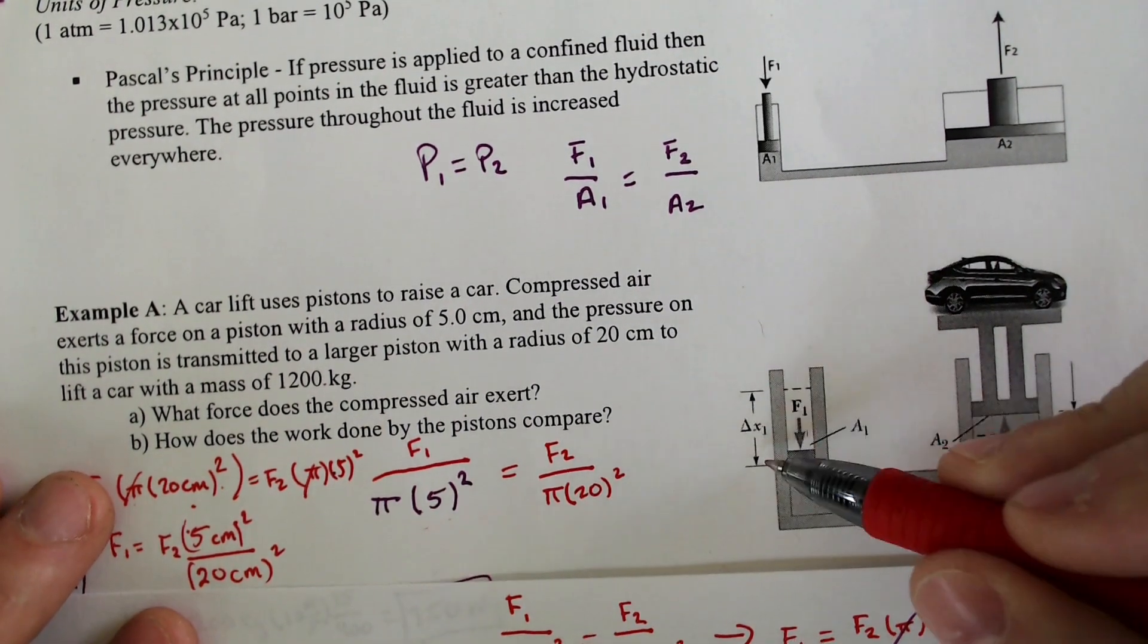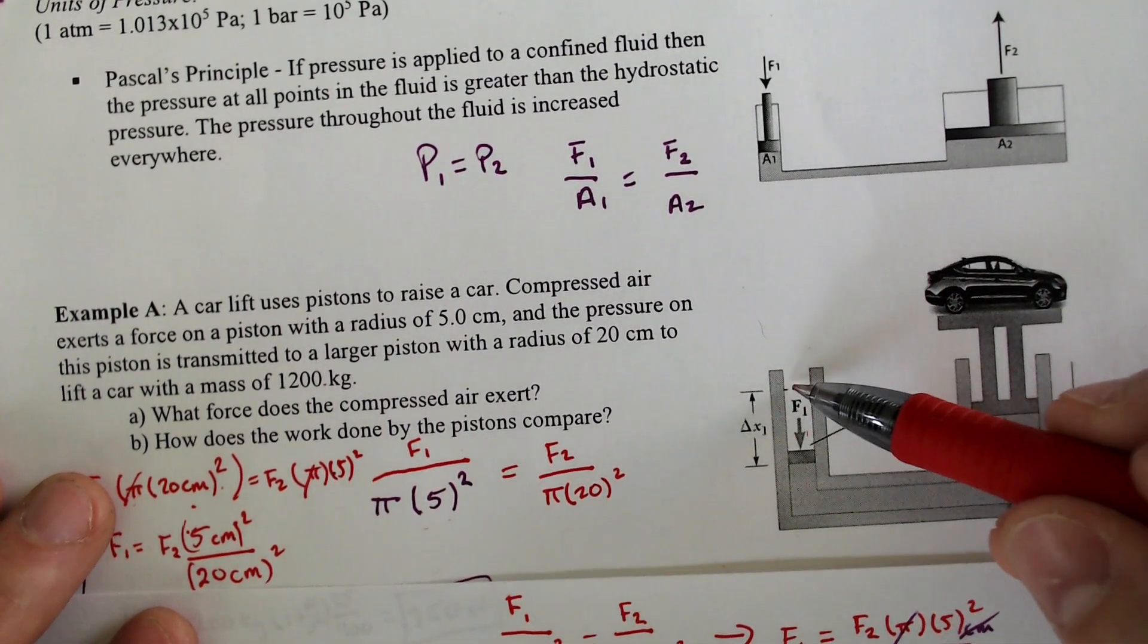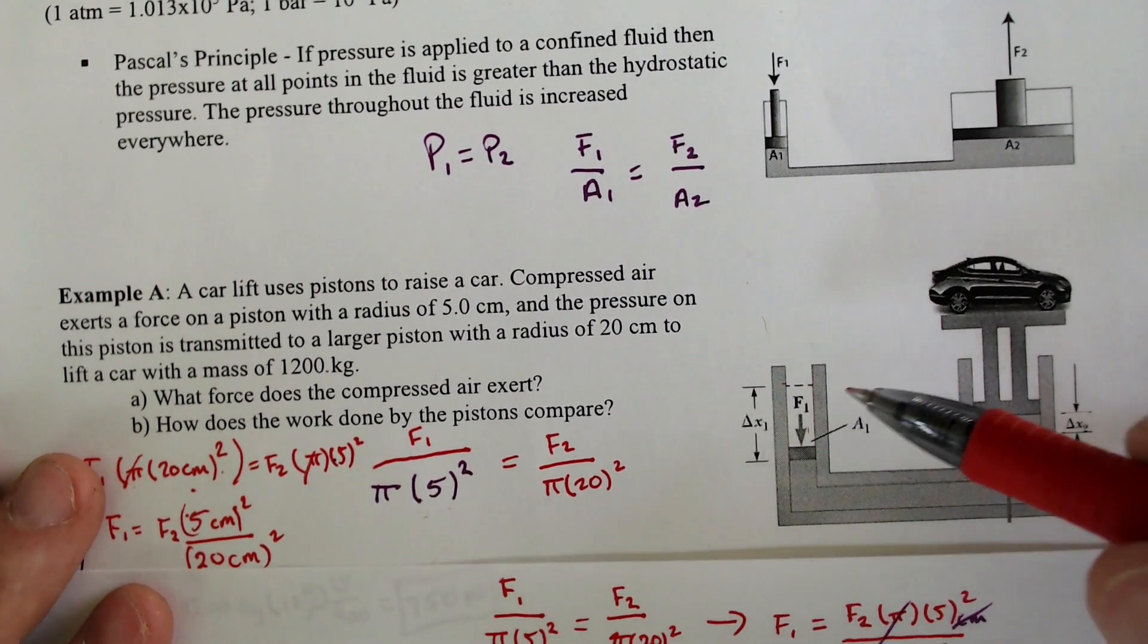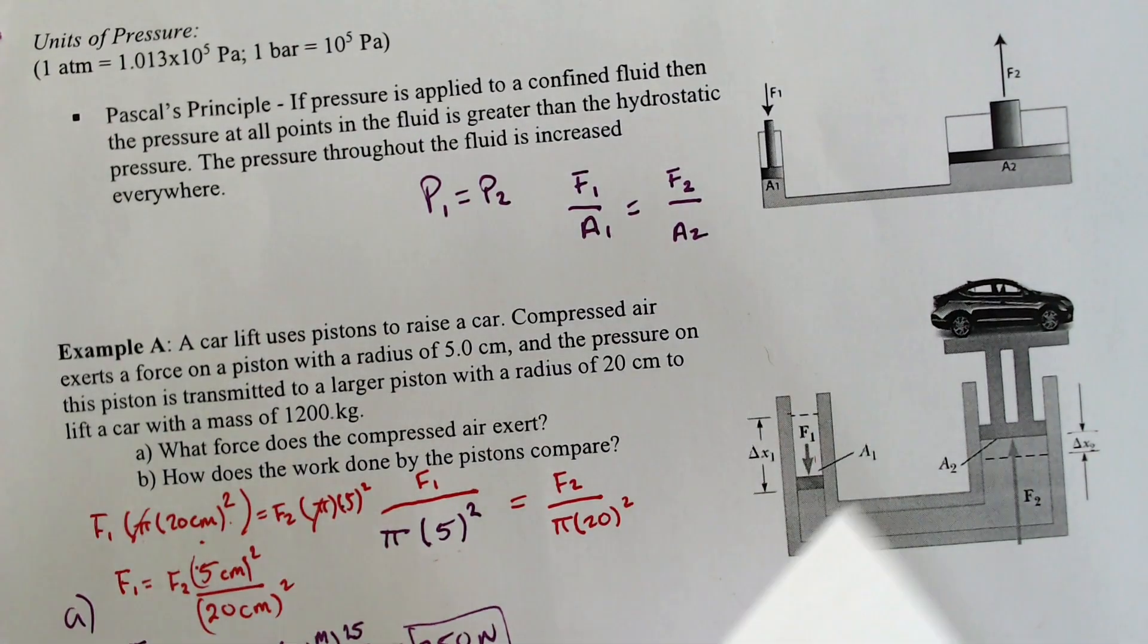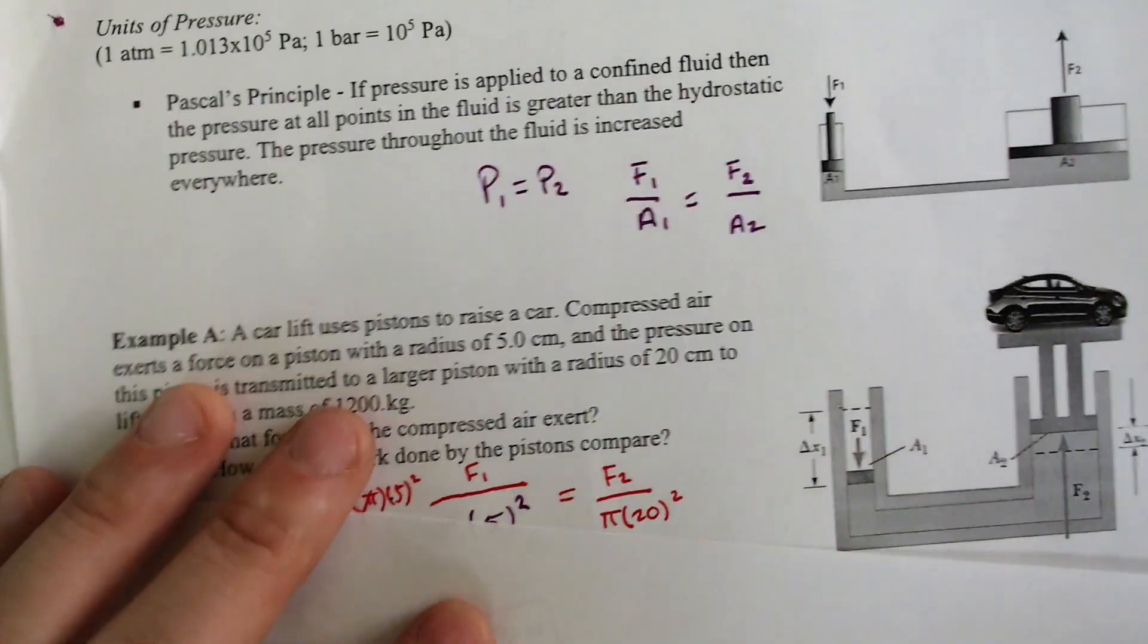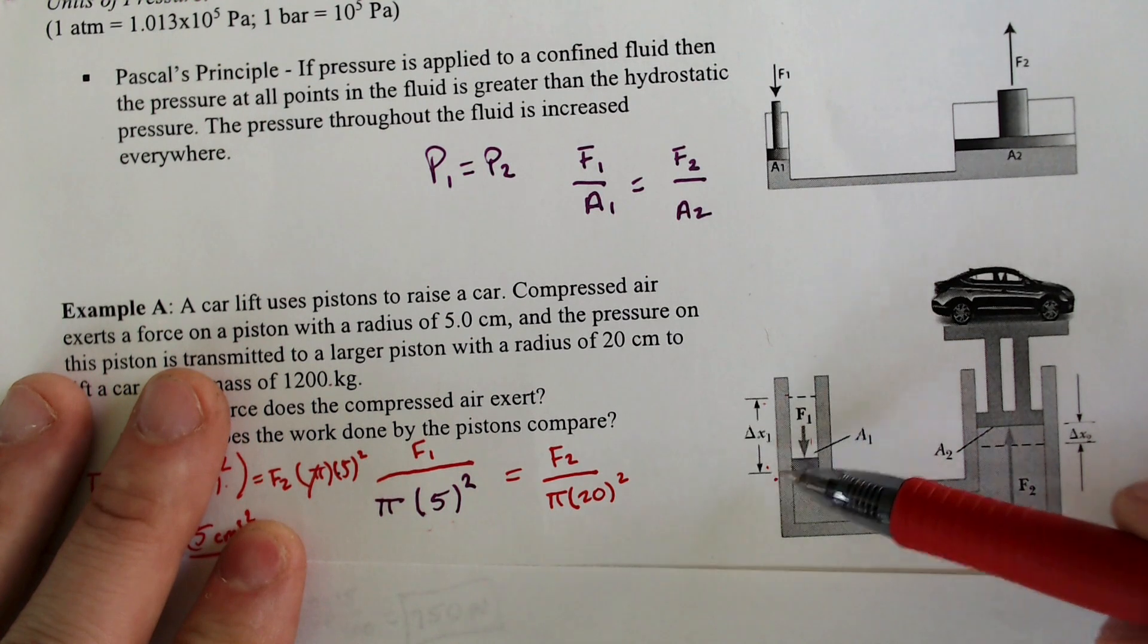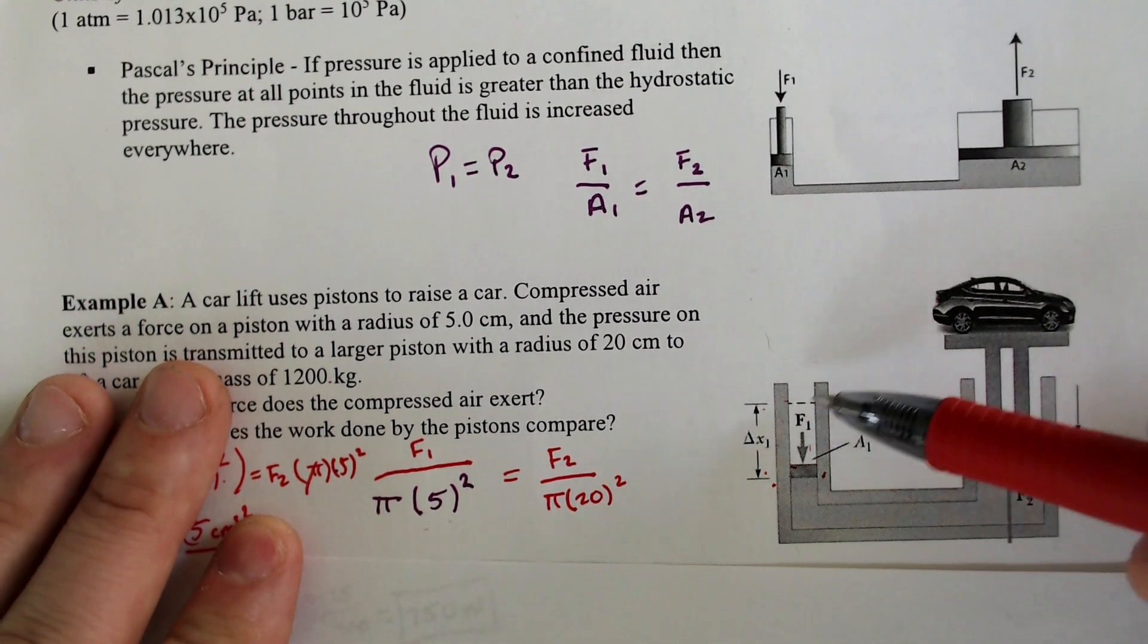Delta x is involving length and like where this fluid used to be, used to be kind of like volume, right? We have essentially this vertical height times the area equals volume.